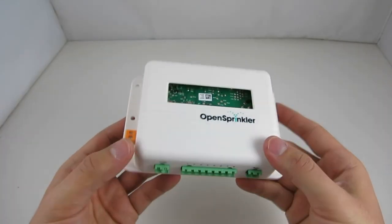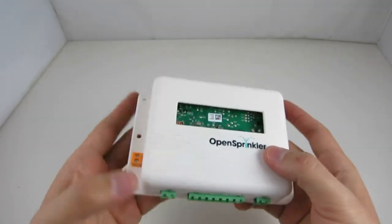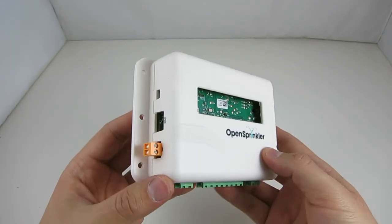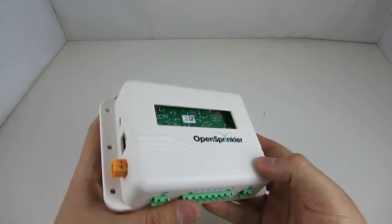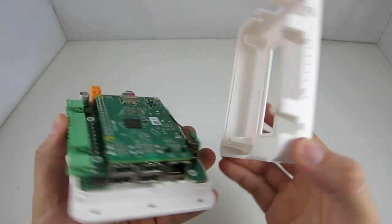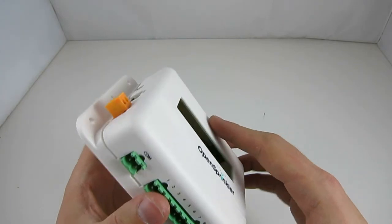In the past, OpenSprinklerPie has been using the OpenSprinkler injection molded enclosure. While this has worked, the enclosure is not tailored to OpenSprinklerPie, so some of the cutouts on the side are not well aligned with the Raspberry Pi.